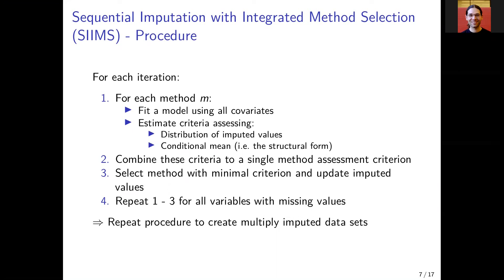This procedure does for each iteration: First, for each method M that we just saw in the previous slide, fit the model using all the covariates. Then second, estimate two different criteria.